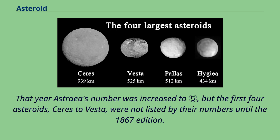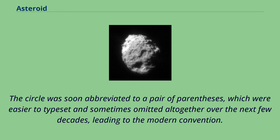Astraea's number was increased to five, but the first four asteroids, Ceres to Vesta, were not listed by their numbers until the 1867 edition. The circle was soon abbreviated to a pair of parentheses, which were easier to typeset and sometimes omitted altogether over the next few decades, leading to the modern convention.